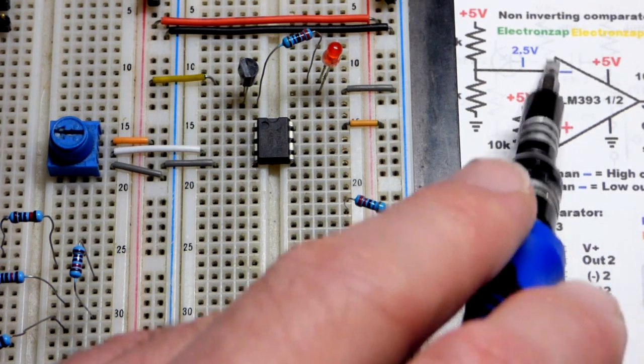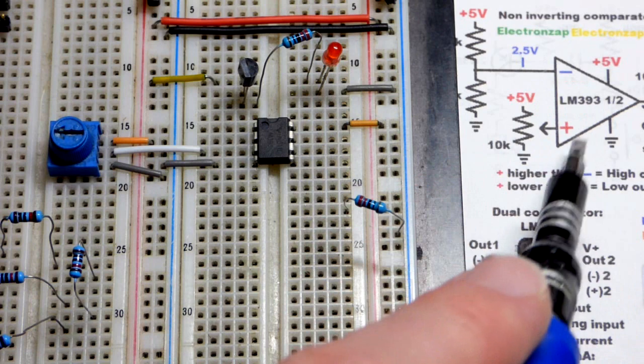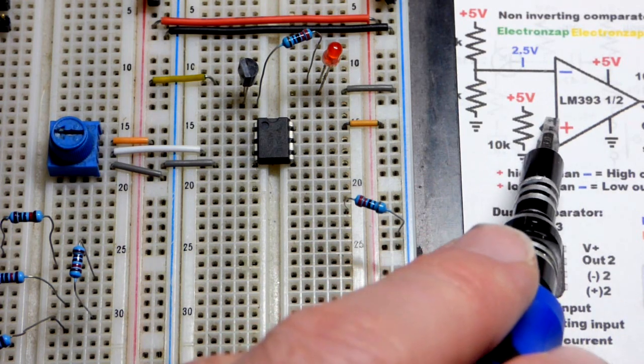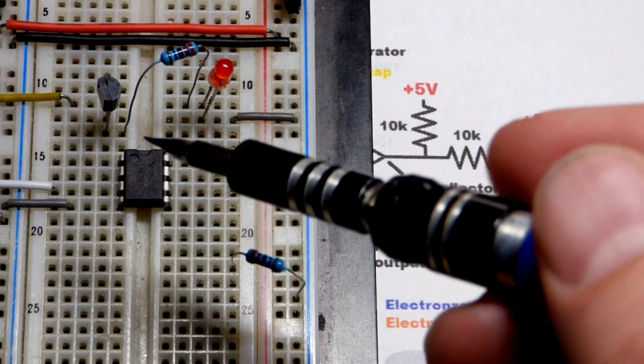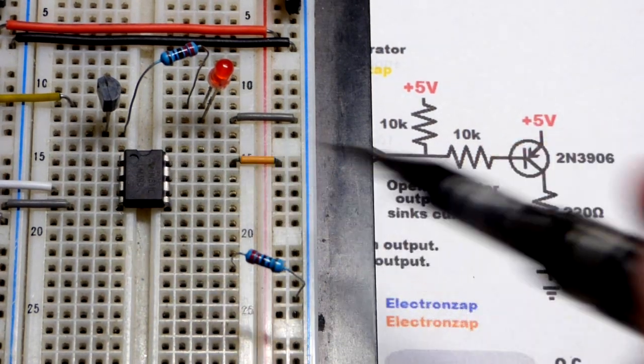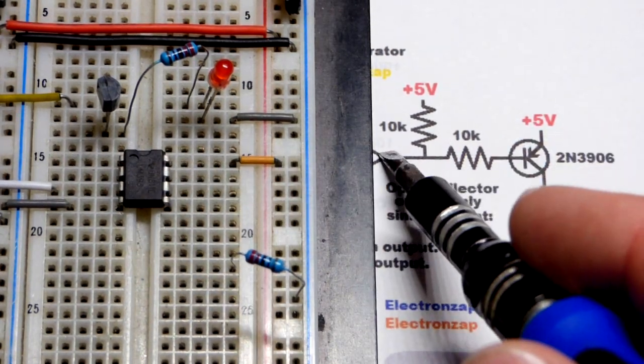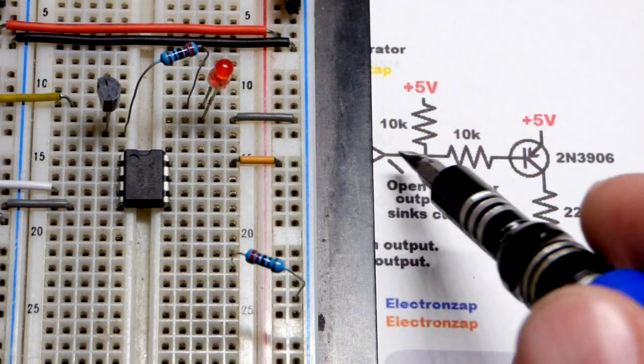You got to make sure you pay close attention on the schematic. Sometimes they put the plus above the minus. But in this case, that's our signal voltage coming in. So now the output for this left side comparator there is the top left pin, pin number one there.